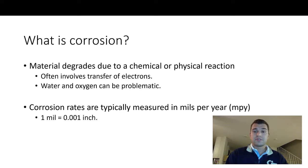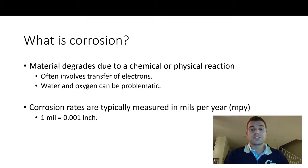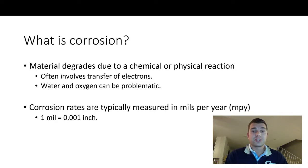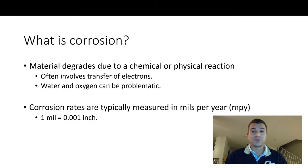So first — what is corrosion? This is when material degrades due to a chemical or physical reaction, and it often involves transfer of electrons. That's how I like to think about corrosion — transfer of electrons. If you want to learn about cathodes and anodes, go to a different resource. I'm going to keep it really simple.